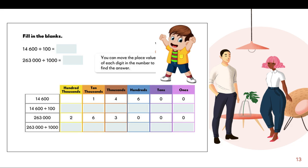Remember the place value chart we used earlier? We can also use this when we divide a whole number by 100 and by 1,000. Let's try dividing 14,600 by 100. We will move each digit's place value two places to the right. Do you notice that the zeros disappeared? So 14,600 divided by 100 is 146. Another example: 263,000 divided by 1,000 — move each digit three places to the right. The final answer is 263.